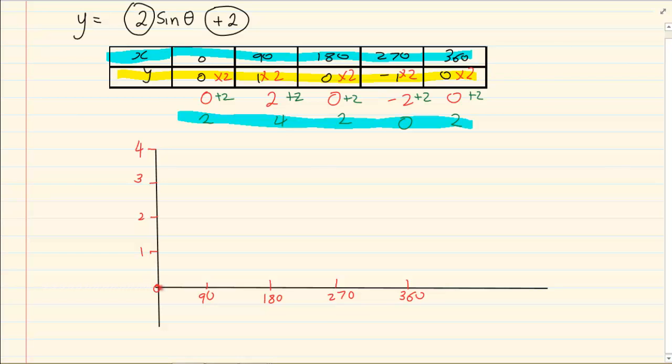This is our zero point. So we are going to first plot 0 and 2. So x is 0, y is 2. Then we are plotting 90 and 4. So x is 90, y is 4. Then we have got 180 and 2. So x is 180, y is 2. Then we have 270 and 0. Then we have 360 and 2. And then it's a matter of joining the dots.